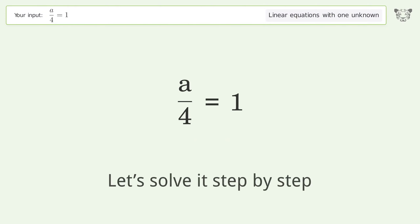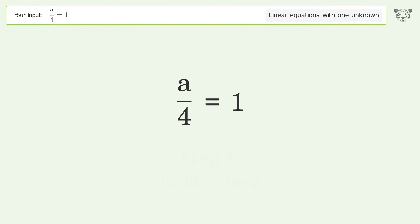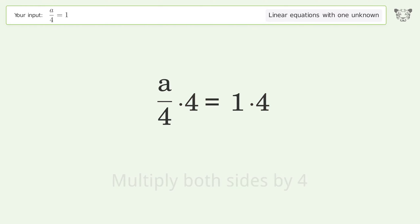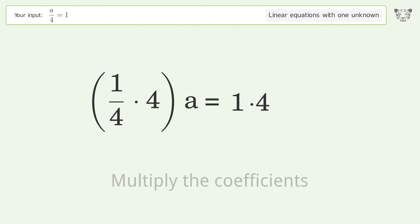Let's solve it step by step: isolate the a, multiply both sides by four, group like terms, multiply the coefficients.